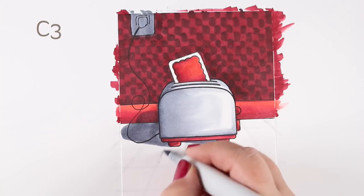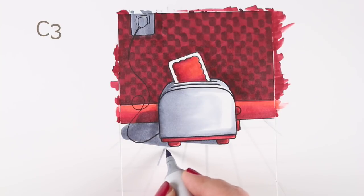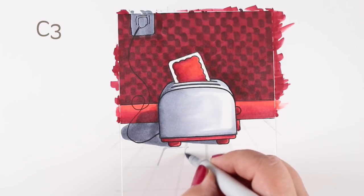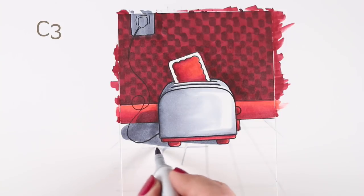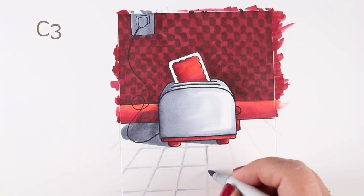So now I've got some shadows coming out from my toaster with my light off toward that right-hand side. And now for the tiles on the counter itself, following along the lines that I drew with my really light marker. And I'm using my C3 to create kind of the left side and the back side of each one of my big tiles.